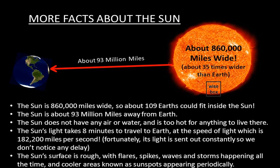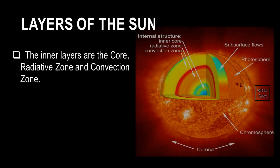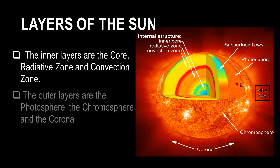The Sun's surface is rough with flares, spikes, waves, and storms happening all the time. The layers of the Sun: The Sun has several layers. The inner layers are known as the core, the radiative zone, and the convection zone. The Sun also has outer layers: the photosphere, the chromosphere, and the corona.